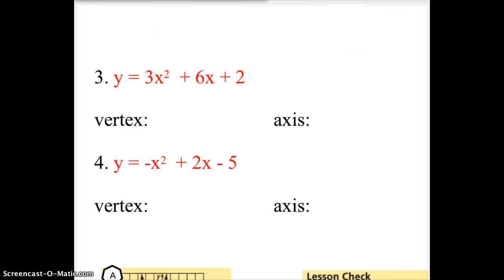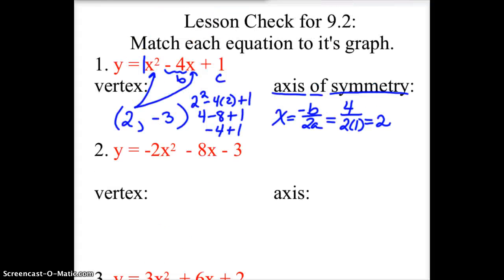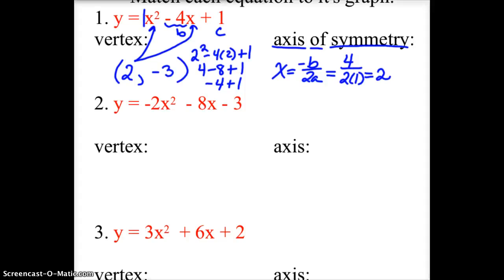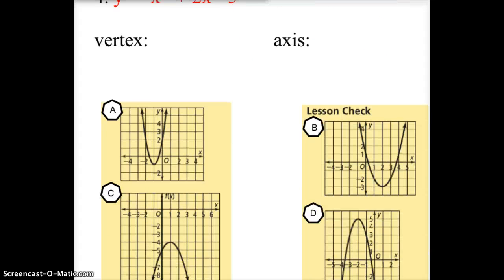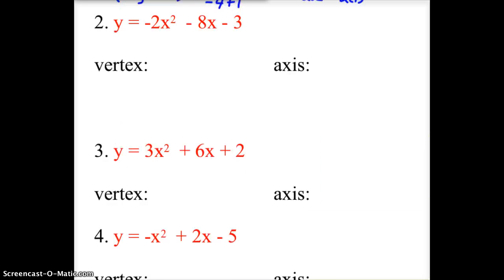So I'd go down to these graphs down here and find out which one has an axis of symmetry - by the way, we can use other things to help us out, since it's multiple choice - because the a is positive, we know it opens up. It's got an axis of symmetry at 2, so I didn't even really need to know the vertex was at 2, negative 3. I know that b is the correct answer for number 1, and we'll just do two of these, just for a quick review.